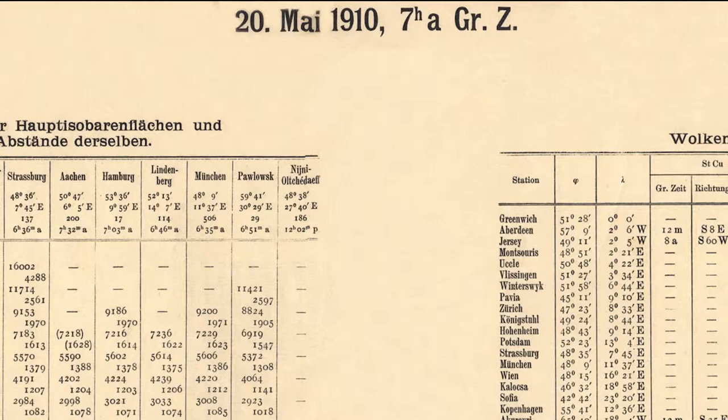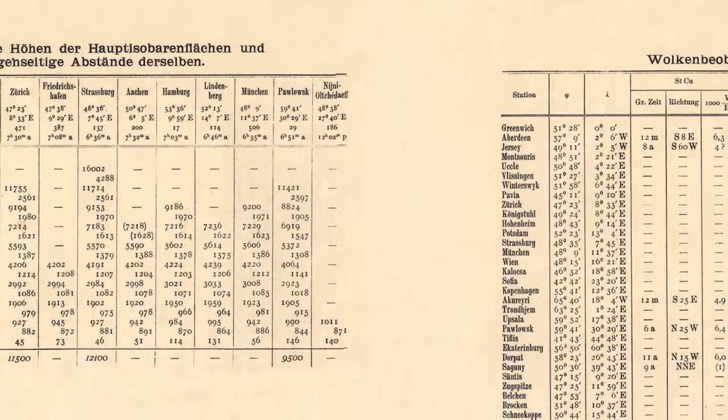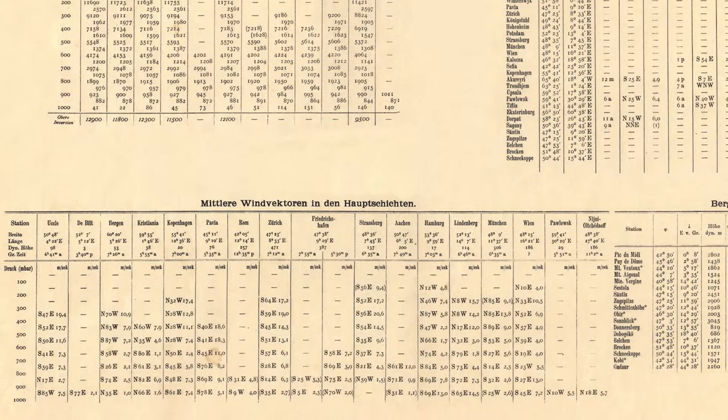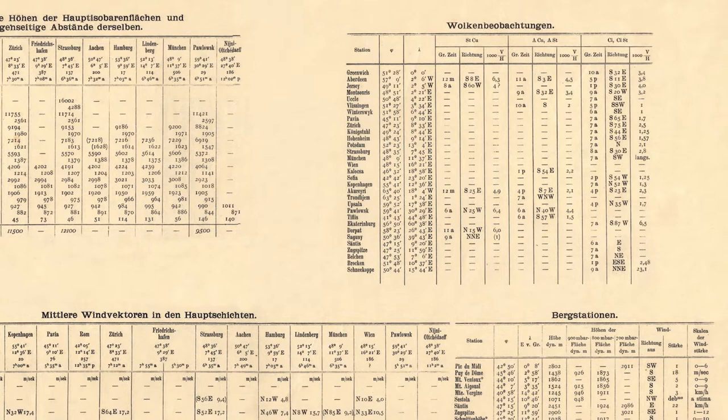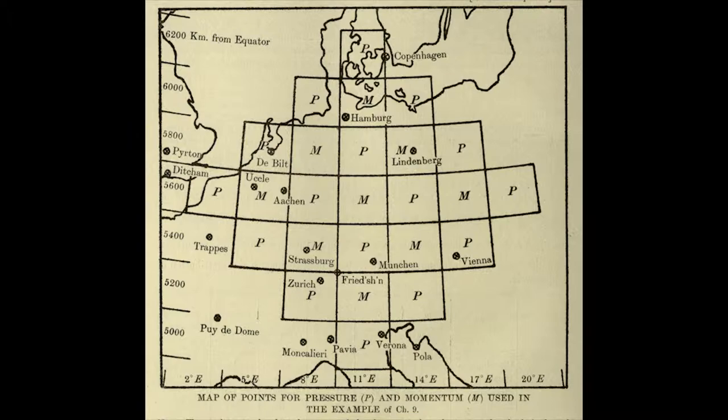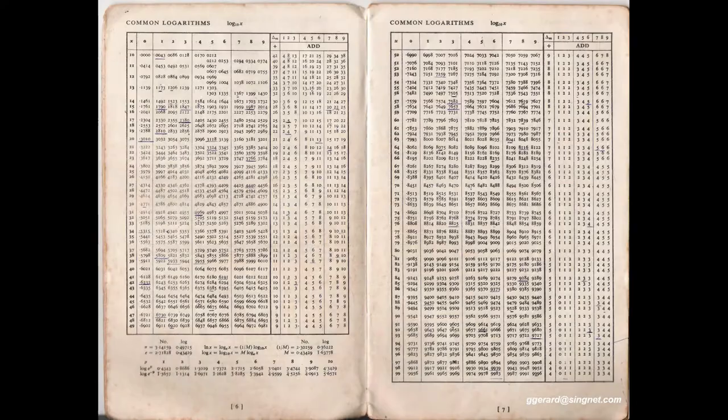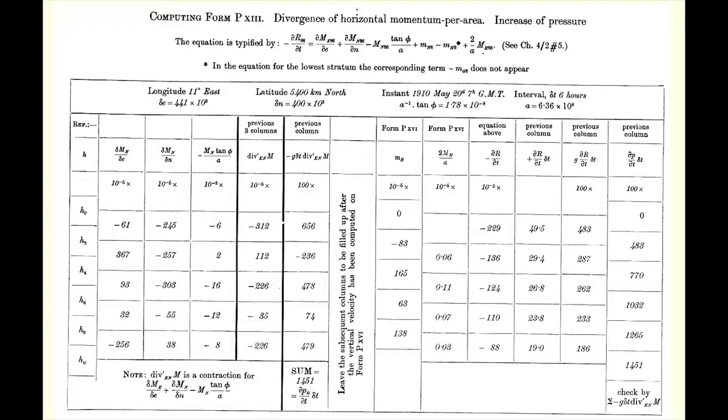He took all that data with him to France, where he planned to use it to make a simple forecast: the change in air pressure over a six-hour period that day, and then compare his forecast to what actually happened. To do this, he divided Europe into squares each about 120 miles on a side, using only a slide rule and some mathematical tables. His office was a heap of hay. Using a sheaf of forms he created to guide the calculations, Richardson by hand, by himself, solved his equations on each square of the map.